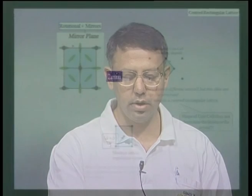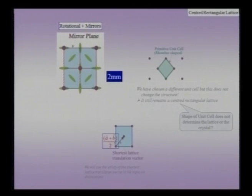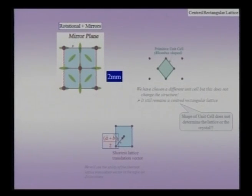The next question we ask is: what is the shortest lattice translation vector for the centered rectangular lattice? We have the centered unit cell, and clearly neither A nor B is the shortest lattice translation vector, but it is actually half the diagonal of the unit cell, which is (A plus B)/2. This shortest lattice translation vector is an important quantity, especially in the context of dislocations, where it plays the role of the Burgers vector.